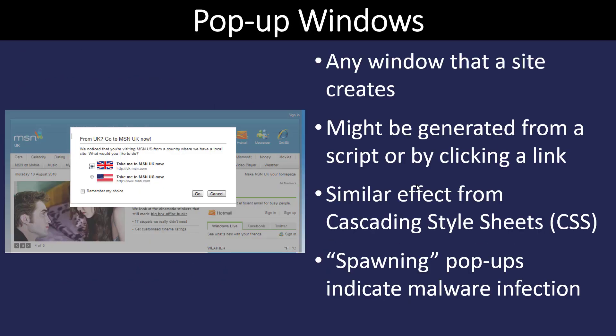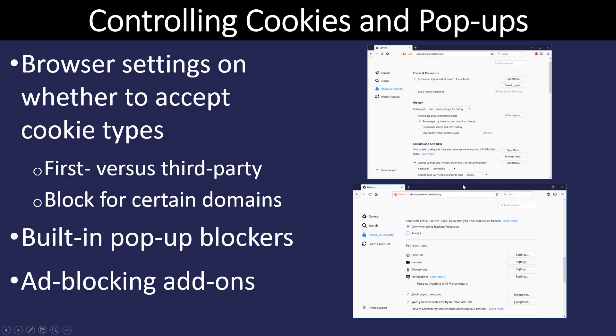Pop-up windows are still around — the person who invented them once said he regretted coming up with the idea, because pop-up windows are annoying. They can be generated by a script or by clicking a link. They are frequently used for malware infections — for example, telling you your antivirus detected thousands of things and to click here to remove them, sending you to a malicious website. Most browsers have a setting to turn off or deny pop-up windows.